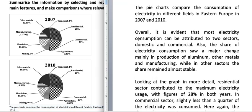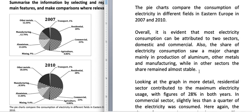So let's look at the sample answer which I have prepared for you. The pie charts compare the consumption of electricity in different fields in Eastern Europe in 2007 and 2010. This is a one-sentence introduction. Then I come up with the overall — the overview of the graph, which I put right after the introduction. Overall, it is evident that most electricity consumption can be attributed to two sectors: domestic and commercial. For residential I have used the word domestic, and you can see 28 percent and 23 percent — so almost half.